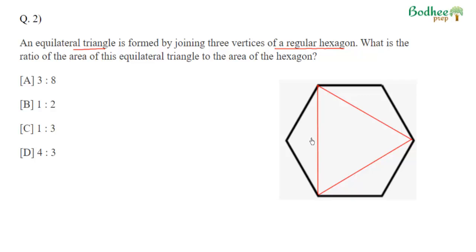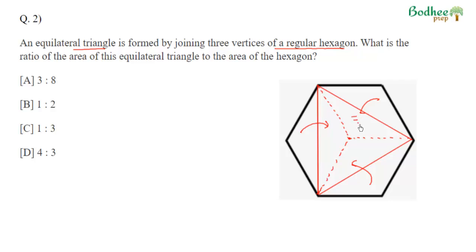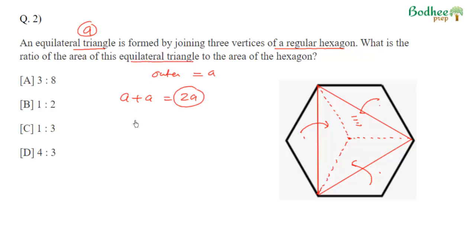This question can be solved by a simple craft method. Assume the hexagon is a piece of paper with an equilateral triangle drawn inside, symmetrically centered for both. If we fold the outer portion keeping the side of the equilateral triangle as the crease, it covers that portion of the equilateral triangle exactly. Doing this for all three outer portions, we observe that the outer portion area equals the area of the equilateral triangle.